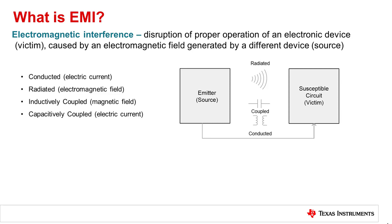The four coupling categories are: conducted, inductively coupled, capacitively coupled, and radiated. These categories are tested through EMC emissions and immunity testing.